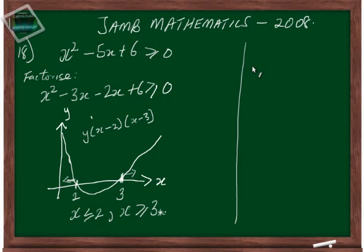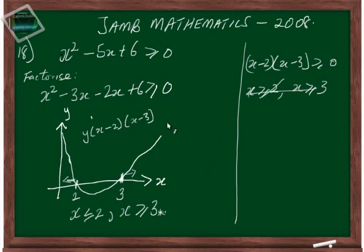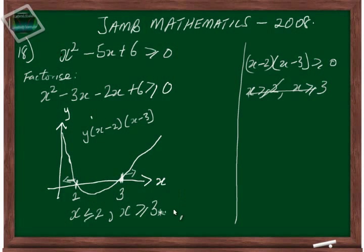Going back to the earlier common mistake: if you had just said x minus two times x minus three is greater than or equal to zero, and concluded x is greater than or equal to two and x is greater than or equal to three, that does not match our graph result. Even though one part might partially match, combining both makes the whole approach wrong. So our correct answer, matching the options given, is x is less than or equal to two or x is greater than or equal to three.